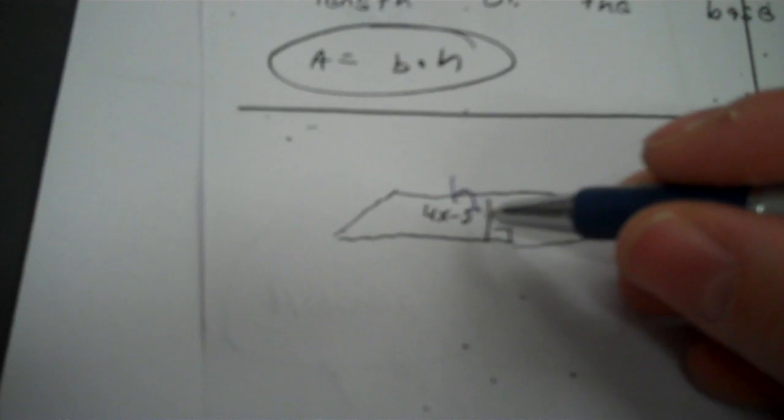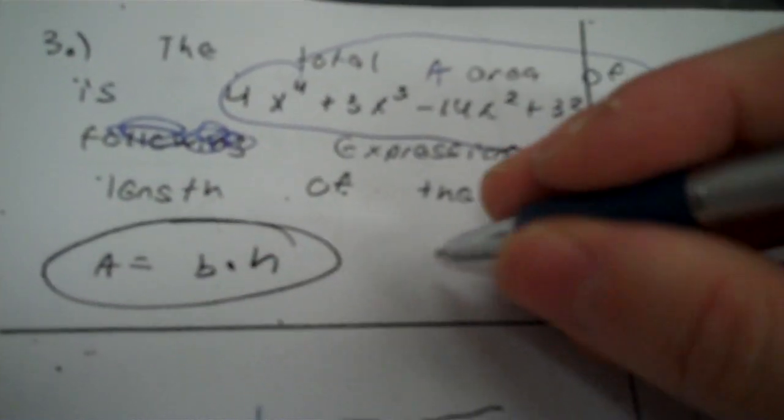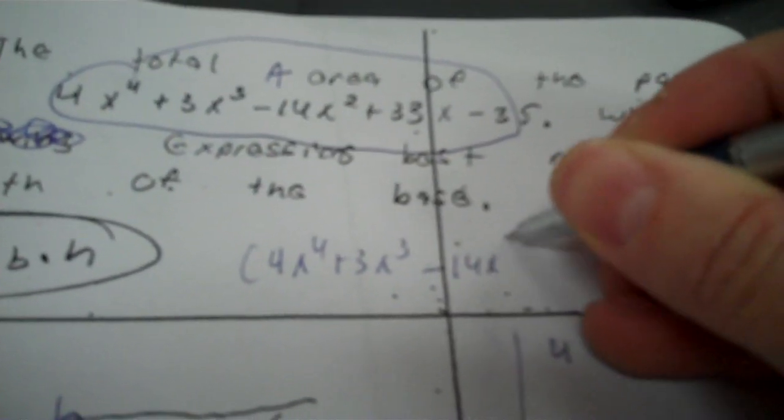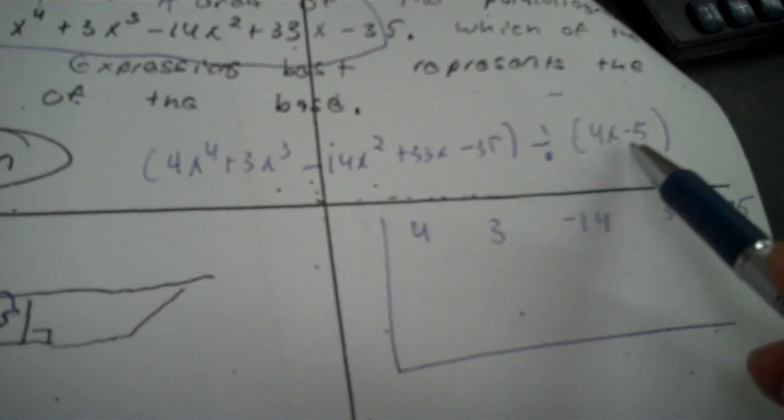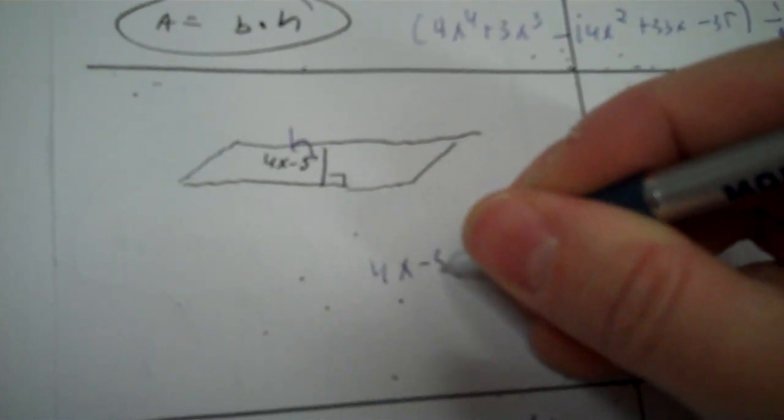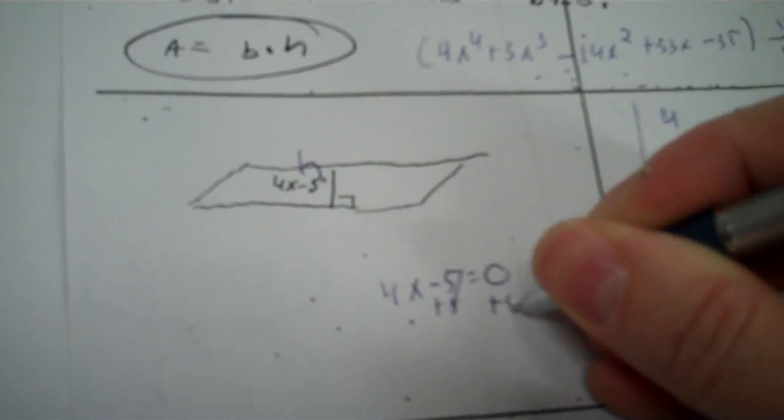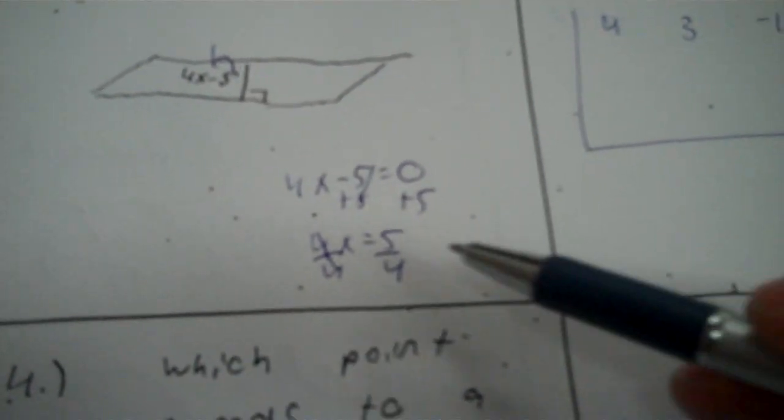To find my divisor, I take what I'm dividing by — the 4X minus 5. What you're doing is taking the area 4X to the fourth plus 3X to the third minus 14X squared plus 33X minus 35, and dividing by the expression 4X minus 5. I take my divisor 4X minus 5, set that equal to zero. Add 5 to both sides, so 4X equals 5. Divide by 4, and you get 5 over 4. Then execute the synthetic division — drop your 4.